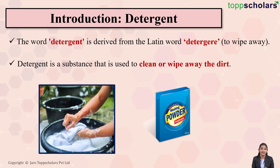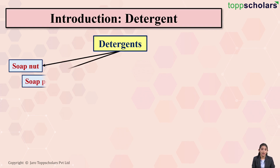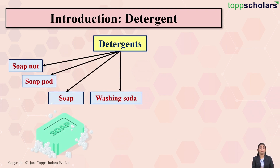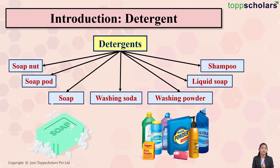Detergent is not only used for washing clothes — it is also used for washing your hair and cleaning many things. There are different kinds of detergents, for example: soap nut, soap pod, soap, washing soda, washing powder, liquid soap, and shampoo. These all are detergents.